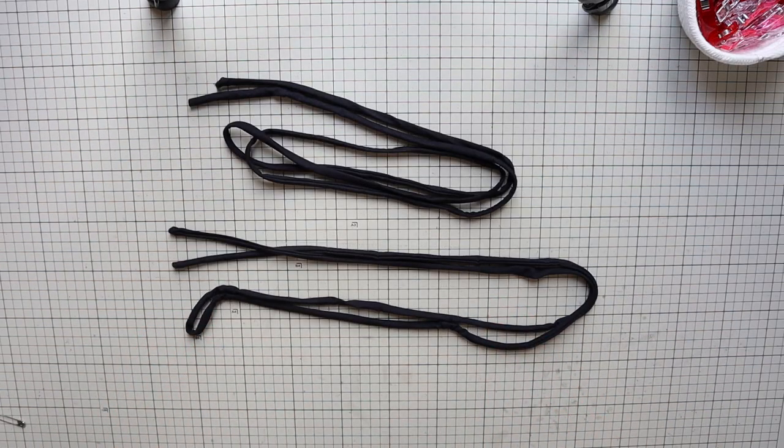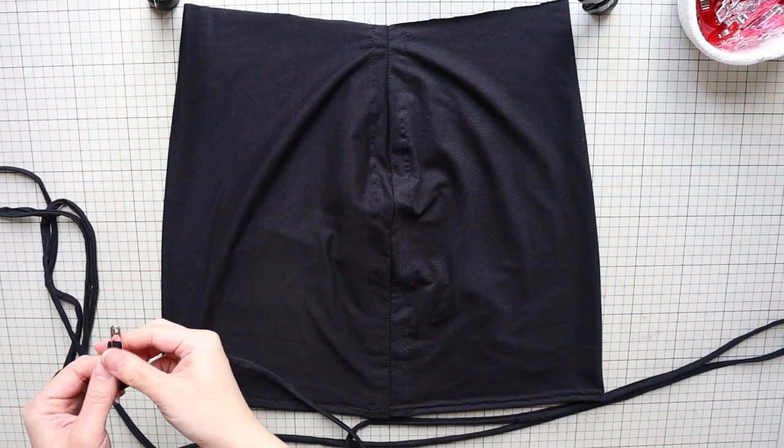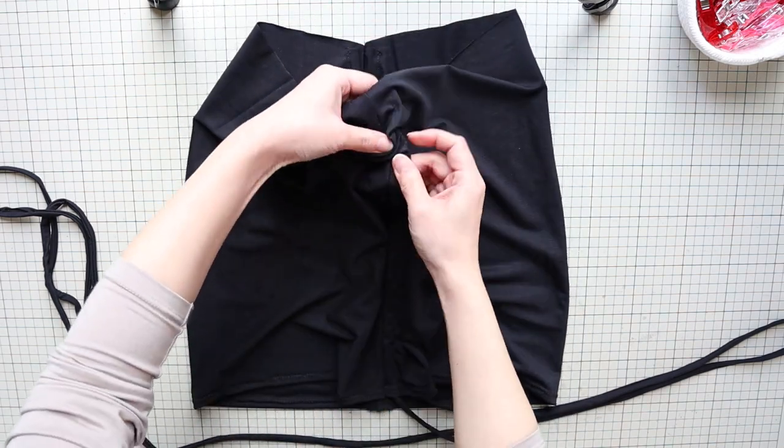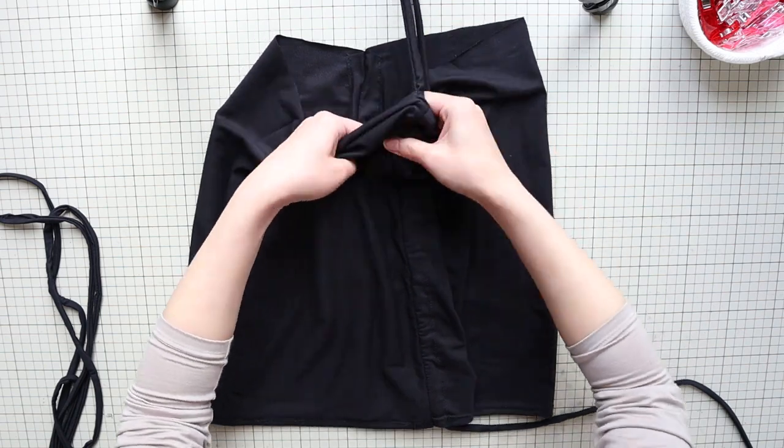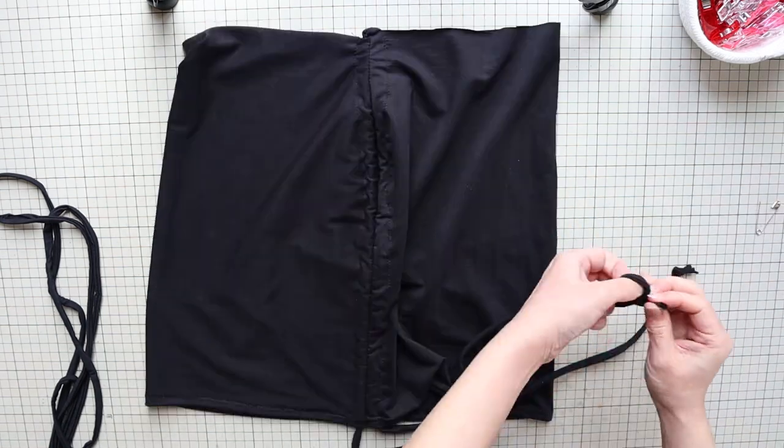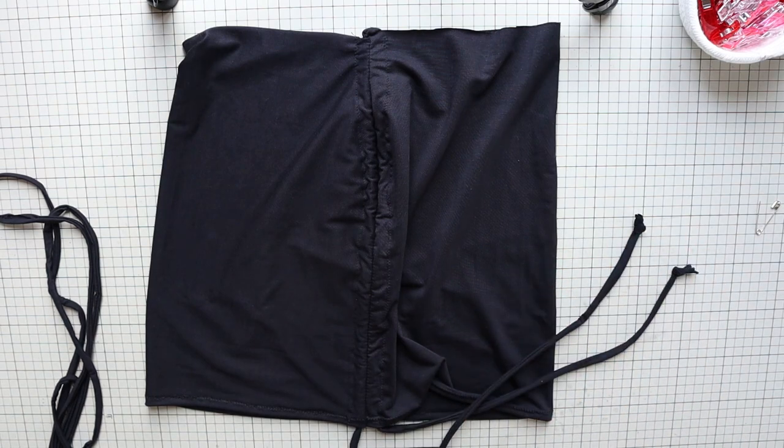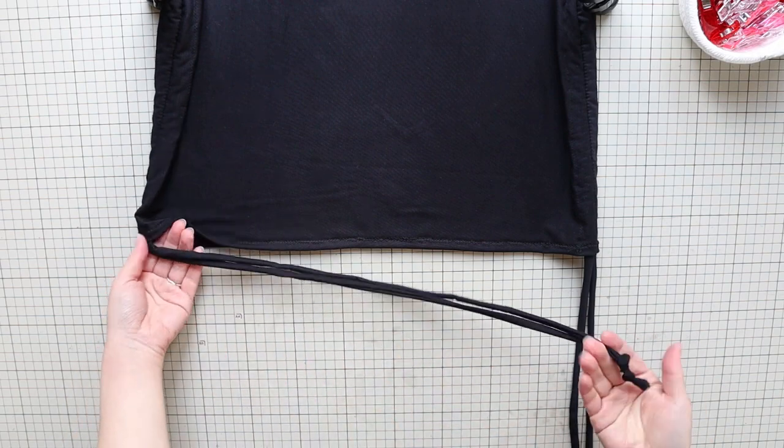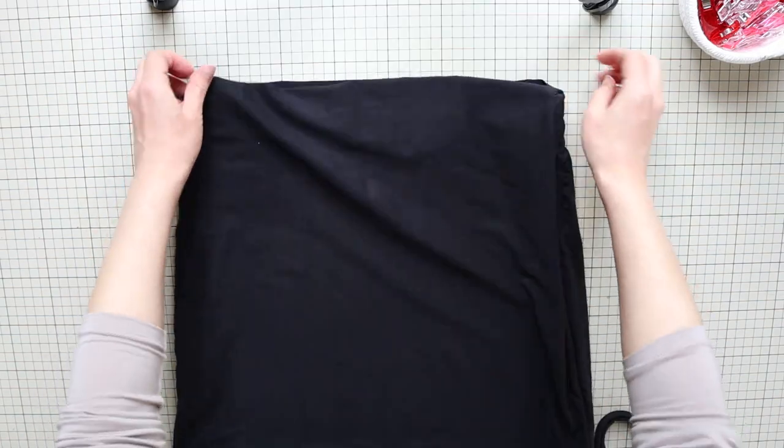Place the safety pin at the end of the tie and from the bottom end at the side seam, thread it through one of the channels and take it through the other channel. And tie the ends into knots. Repeat on the other side and even out the ties. And the ruched skirt is ready!